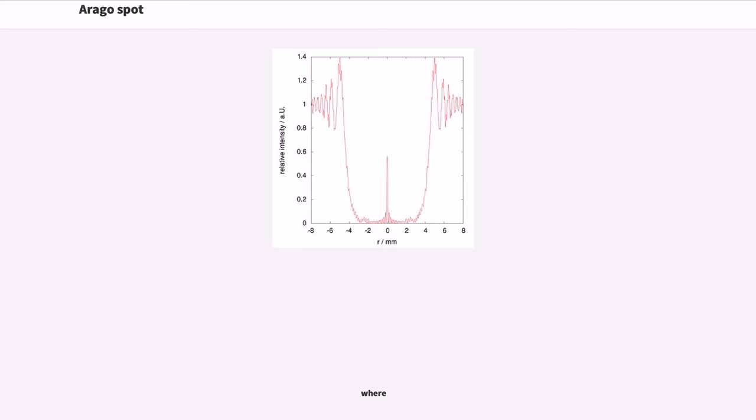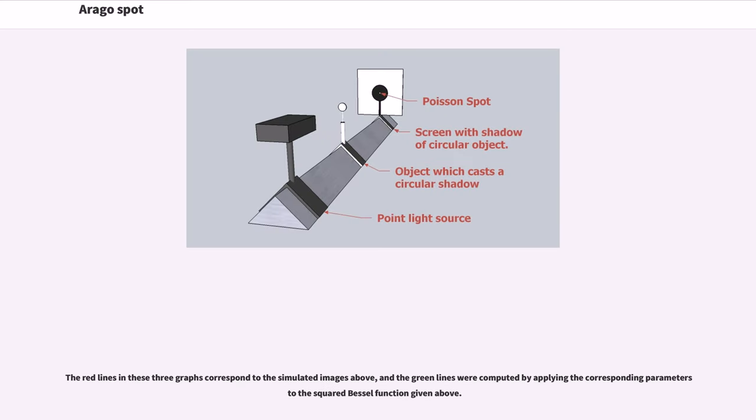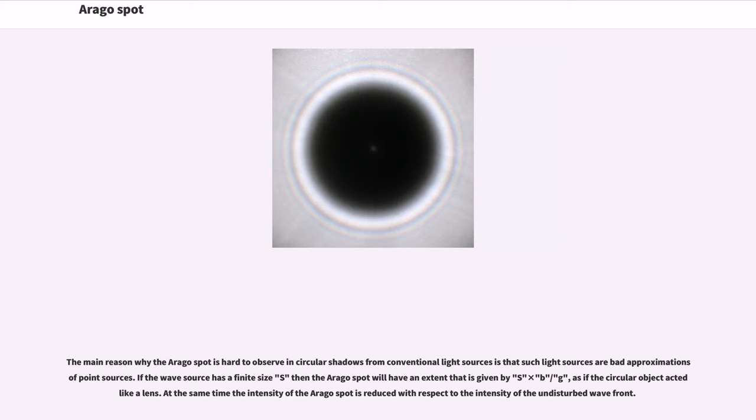The following images show the radial intensity distribution of the simulated Arago spot images above. The red lines in these three graphs correspond to the simulated images above, and the green lines were computed by applying the corresponding parameters to the squared Bessel function given above.